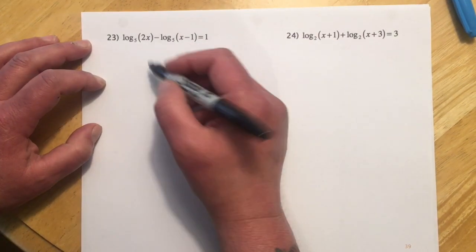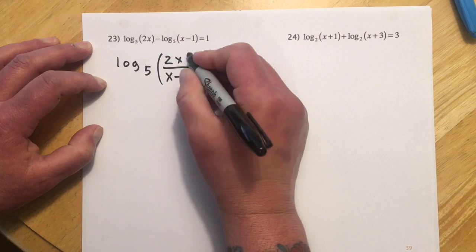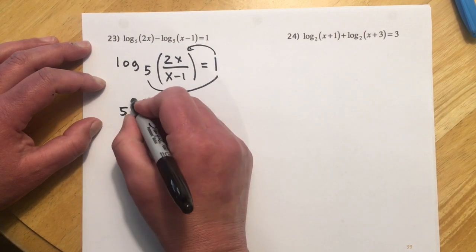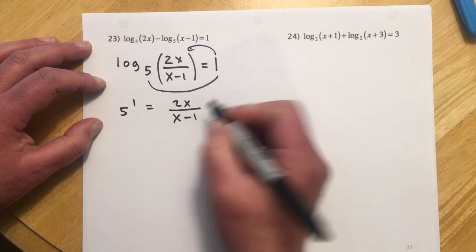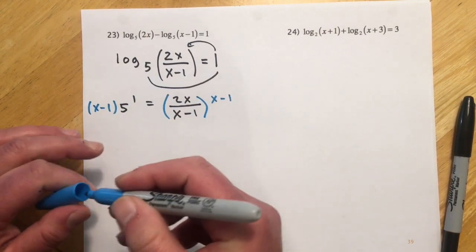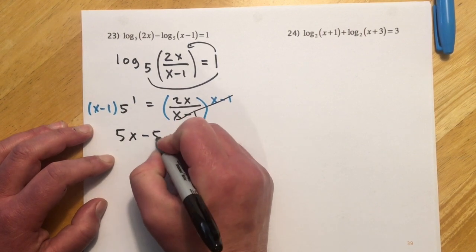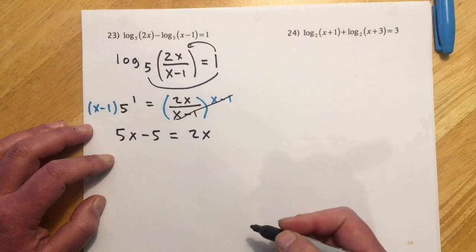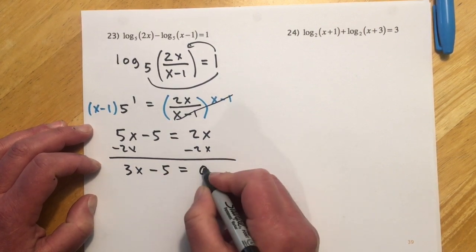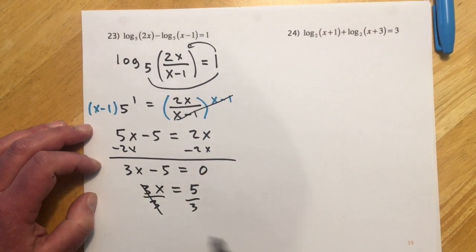Number 23: subtraction means divide. Log base 5 of (2x)/(x−1) equals 1. So 5 to the first equals 2x/(x−1). Multiply both sides by (x−1) to clear the denominator: 5(x−1) = 2x, giving 5x − 5 = 2x. Bring 2x over: 3x − 5 = 0, add 5, so 3x = 5, and x = 5/3.